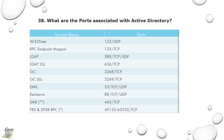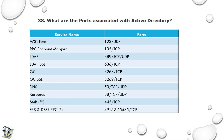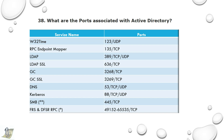38th question: What are the ports associated with Active Directory? W32tm port 123 UDP, RPC 135 TCP, LDAP 389 TCP/UDP, LDAP SSL 636 TCP, Global Catalog 3268 TCP, DNS 53 TCP/UDP, Kerberos 88 TCP/UDP, SMB 445 TCP, FRS and DFS 49152–65535 TCP.